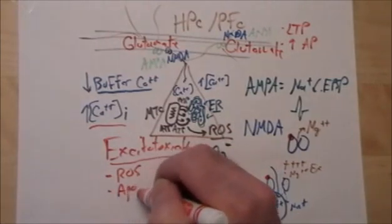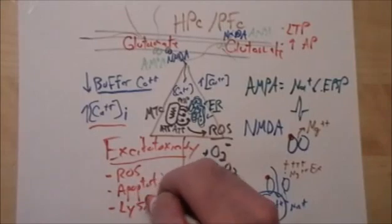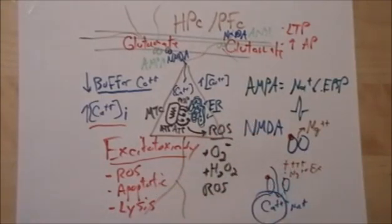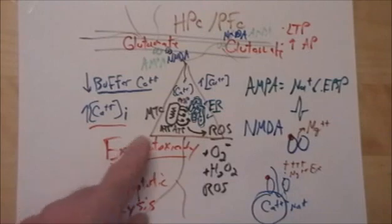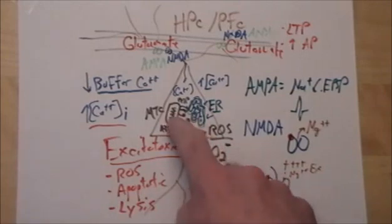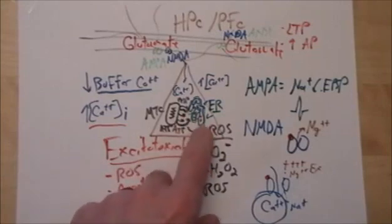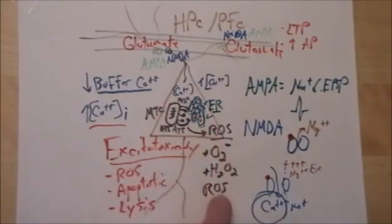This excitotoxicity produced by high levels of intracellular calcium can lead to reactive oxygen species generation. It can lead to apoptotic signals, which we'll talk about, and it can lead to lysis. In my mind, these high levels of calcium in these neurons—we've talked about that when we covered the hippocampal networks—these high levels of intracellular calcium set off all these other pathways: reactive oxygen species, because there's lots of ATP being generated; apoptotic signals, often kicked off through the mitochondria; and then lysis.